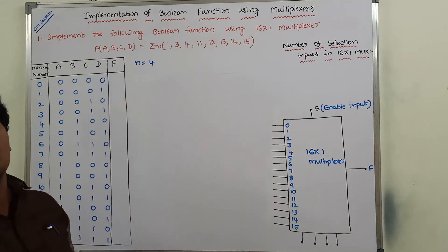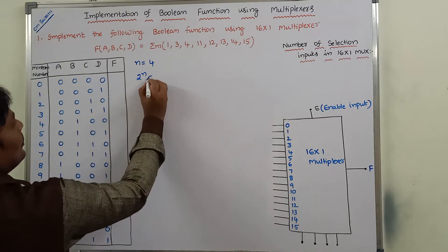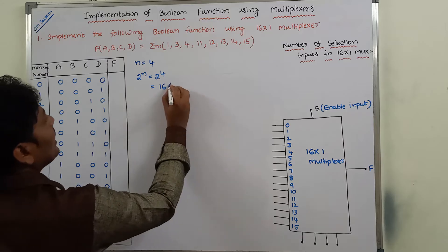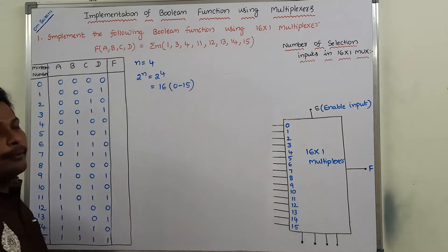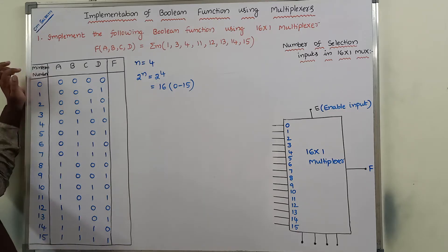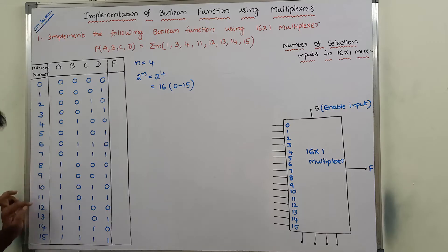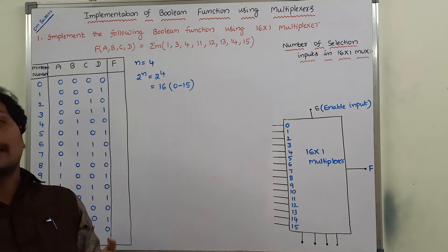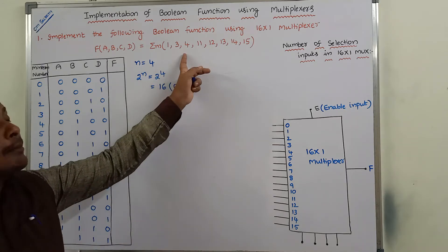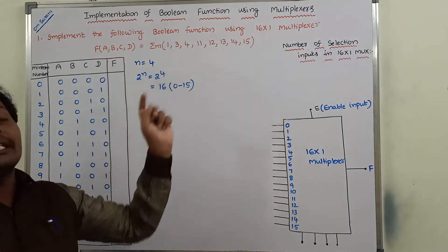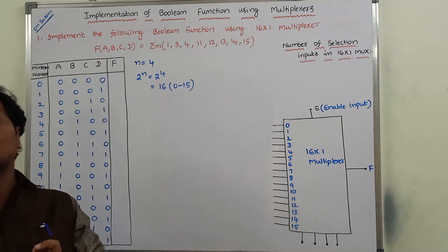With four input variables, the number of possible input combinations is 2 to the power n, where n is 4, giving 16 possible input combinations from 0 to 15. Each possible input combination is represented in terms of four bits, from 0000 to 1111. Each combination represents one minterm number. For the given minterm numbers, the Boolean function produces output 1; for remaining minterms, output is 0.